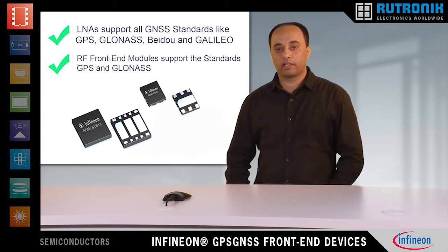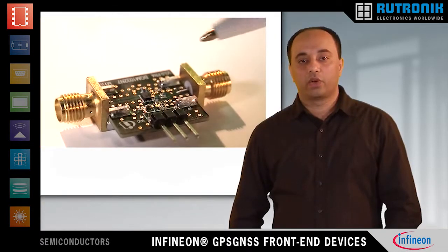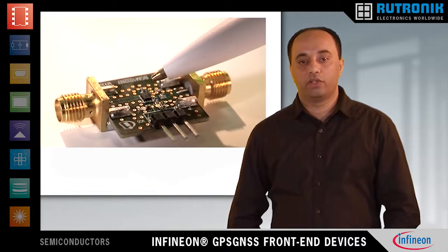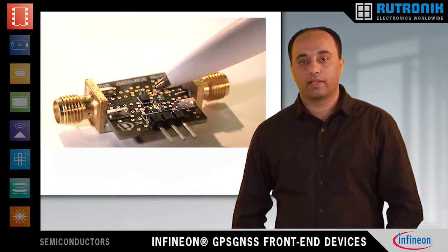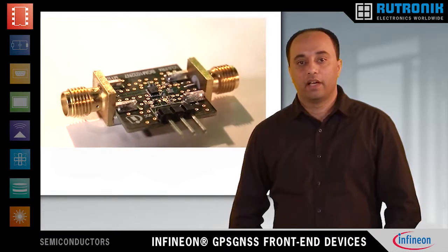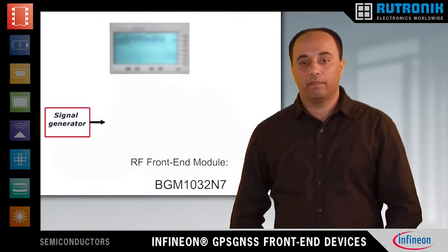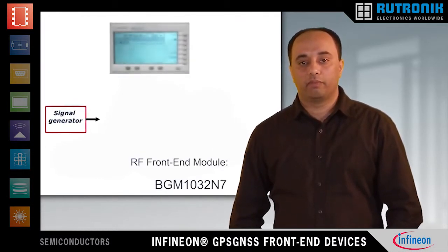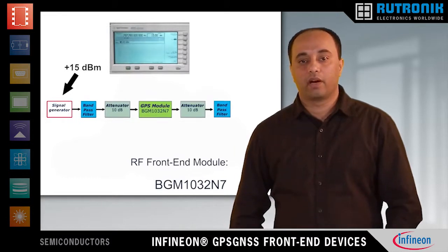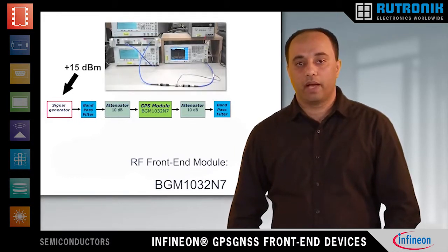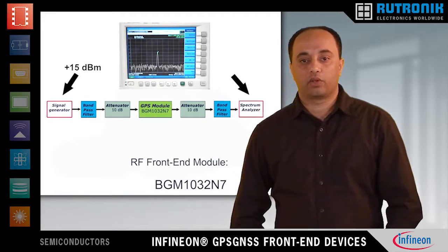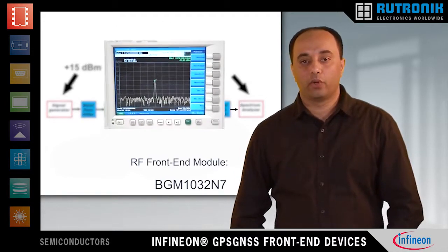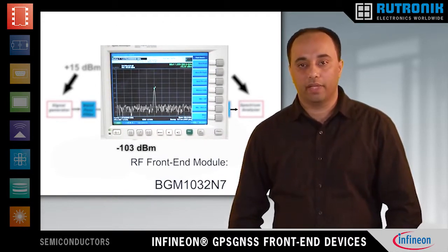Infineon provides the world's smallest LNA and modules. Here is our BGM1032N7 GPS module, designed to block high-power out-of-band signals. As you can see here, an LTE band 13 signal is fed with 15 dBm. The second harmonic, falling into the GPS band, can be seen on the spectrum analyzer. The corresponding harmonic level at the module input is minus 103 dBm.